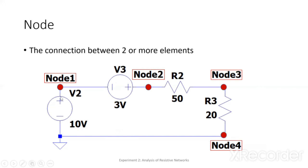Remember, the node is the junction in between the elements. We have this element V2, element V3. They are being connected. So, there is a node.